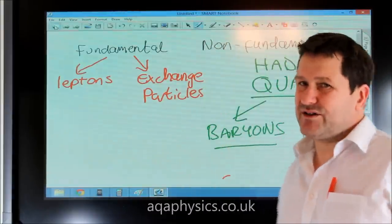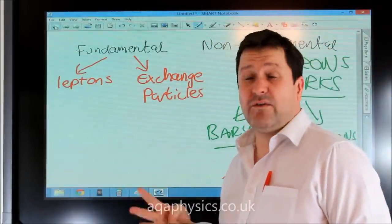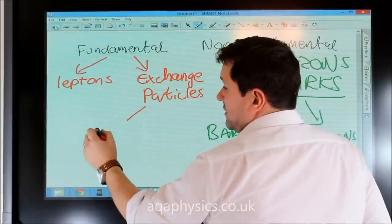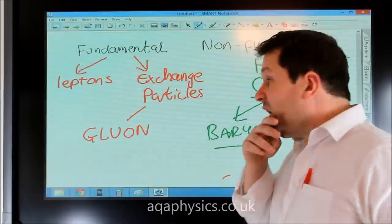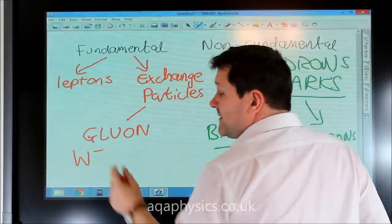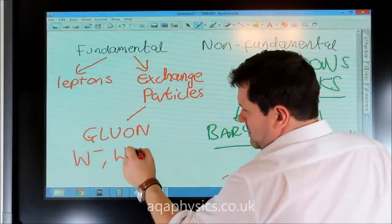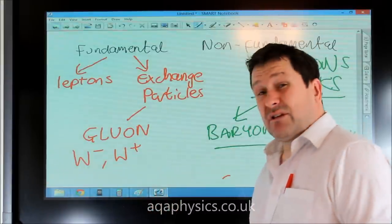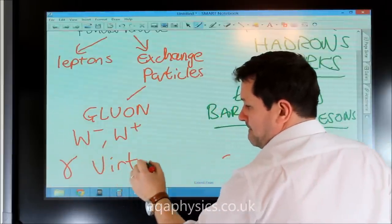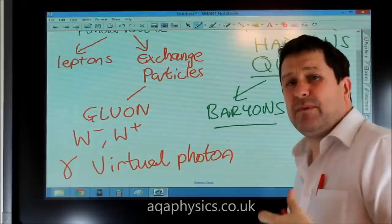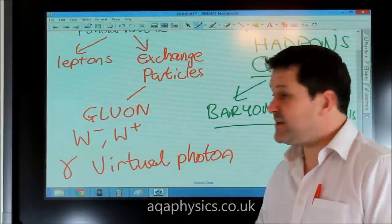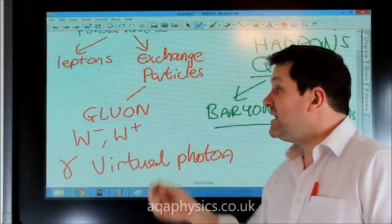The other particles are exchange particles — we've got four, one for each fundamental force. For the strong nuclear force we have the gluon. We've also got the graviton for gravity. For the weak nuclear force we've got the W boson and the Z boson. And we've also got the virtual photon for the electrostatic force. So when we've got Feynman interactions with two electrons, or proton-electron interactions, we get a virtual photon for electrostatic repulsion or attraction, the weak nuclear interaction uses W and Z bosons, gluons carry the strong nuclear force, and the graviton is for gravity.